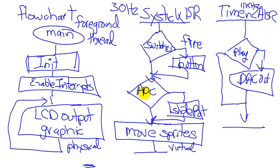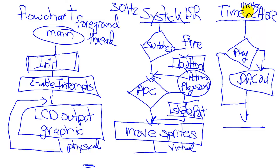If it is time to play a sound, we output to the DAC; if not, we don't. This interrupt service routine separates the action of playing sound from the action of playing the game. When you choose to fire, you schedule the action, but the action itself is performed in the Timer 2 ISR. This also allows us to change from one sound to another depending on what action has triggered it.